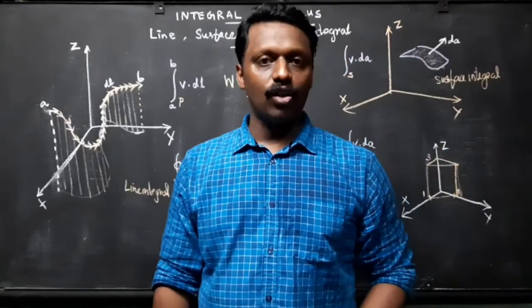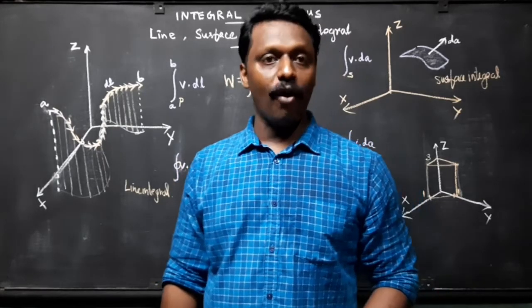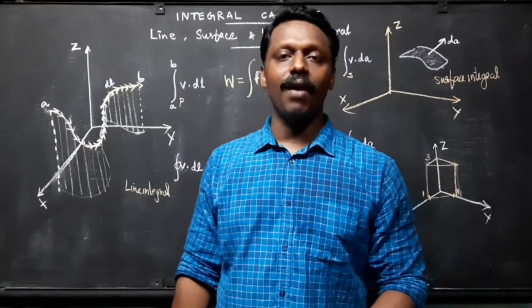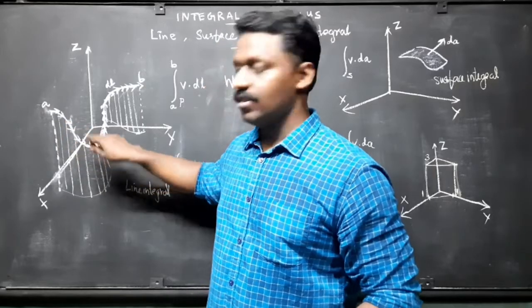At each point on the path, we take the dot product of v evaluated at that point with the displacement dl to the next point on the path, so we will be taking v dot dl over every point.